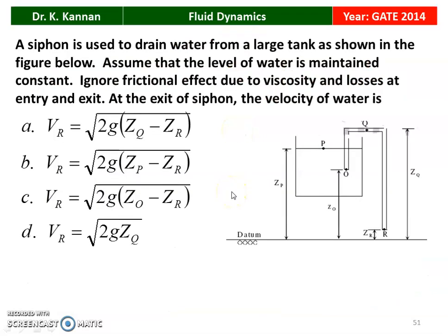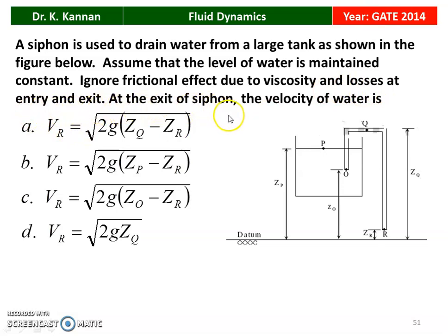The first question is from the 2014 question paper. A siphon is used to drain water from a large tank as shown in the figure. Assume that the level of water is maintained constant — the level ZP is constant. Ignore frictional effects due to viscosity and losses at the entry and exit. At the exit of this siphon, find the velocity of the water. There are four options.